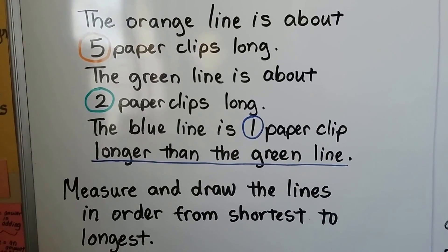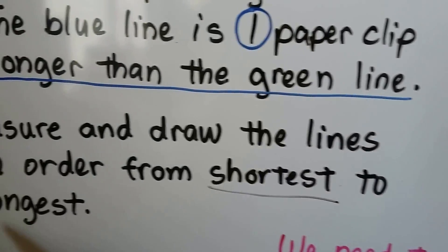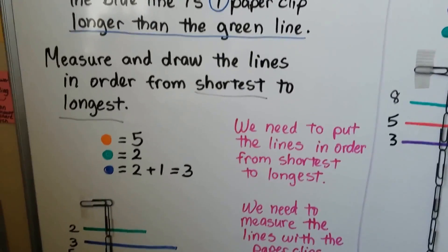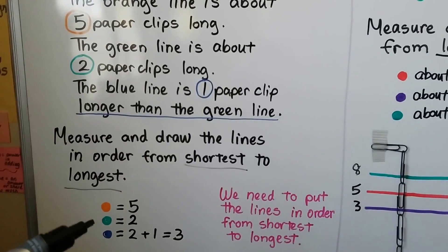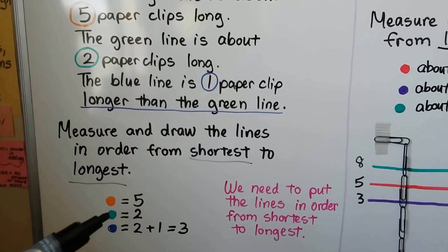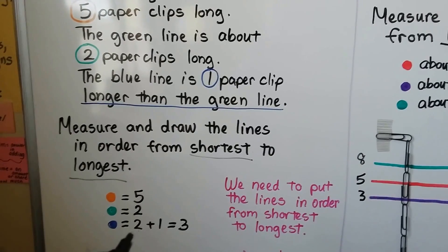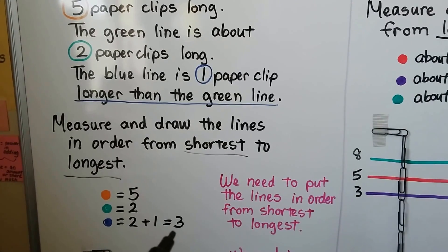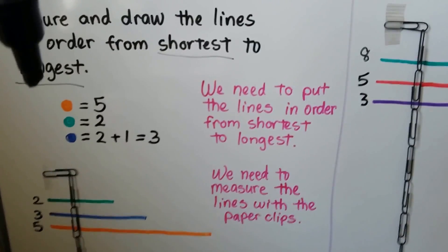We measure and draw the lines in order from shortest to longest. We look at the information given: the orange line is about 5 paperclips long, the green line is about 2, and the blue line is 1 longer than the green. It's 1 more than the green, and the green is 2, so the blue must be 3.